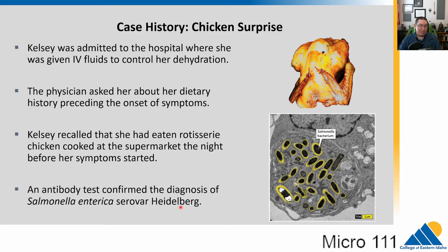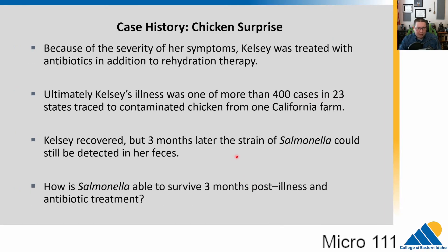There's a special strain of it that is very nasty. They do an antibody test — it glows yellow, which means the pathogen is present. Because of the severity of the symptoms, she's treated with antibiotics and given the rehydration therapy that we talked about with the cholera example.